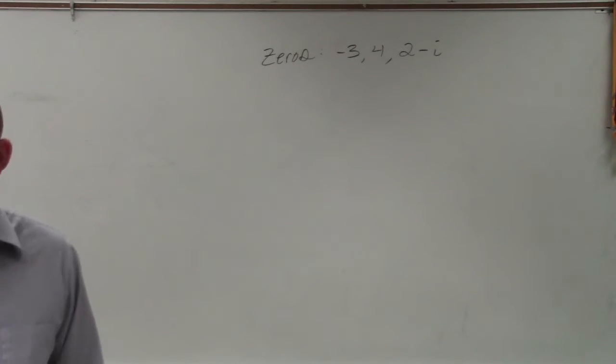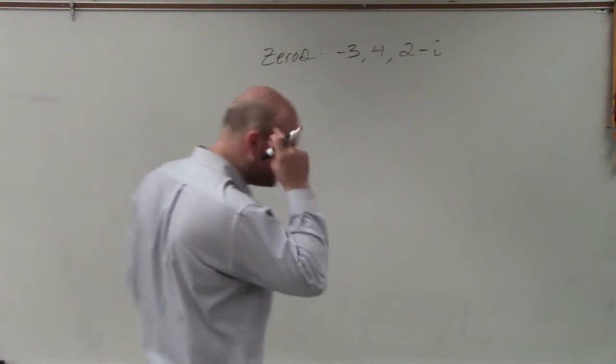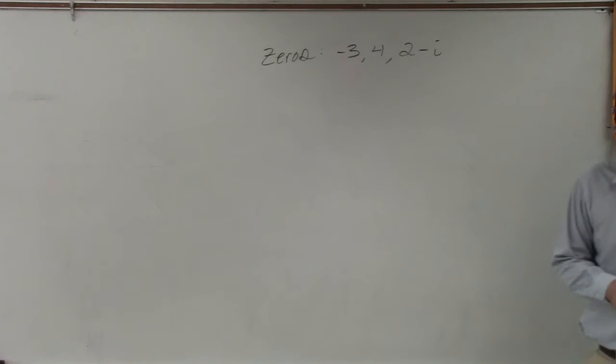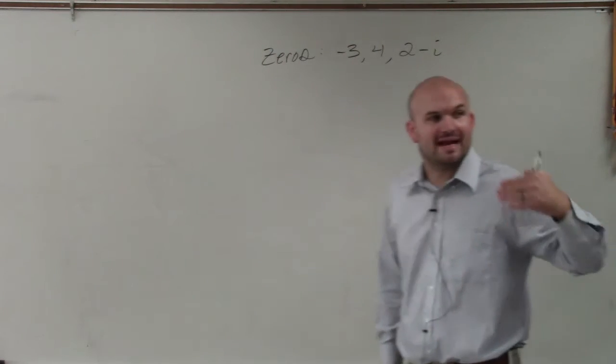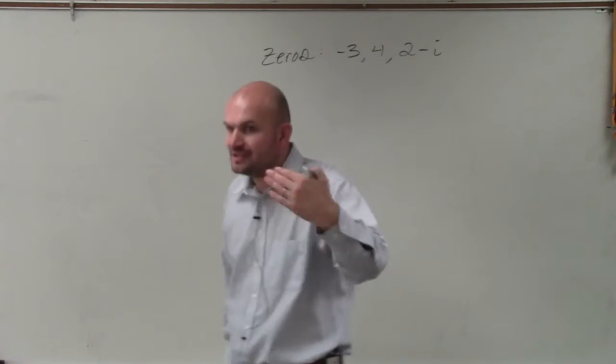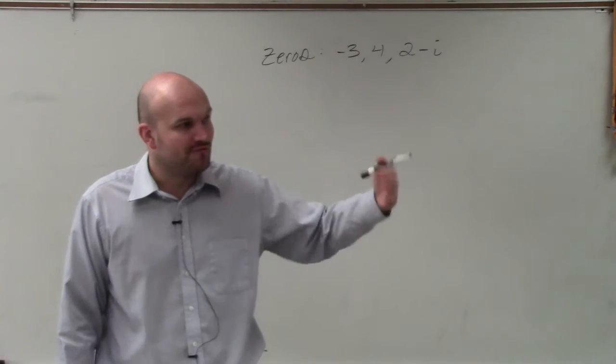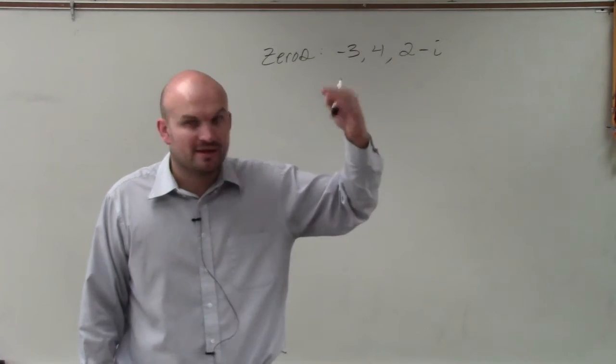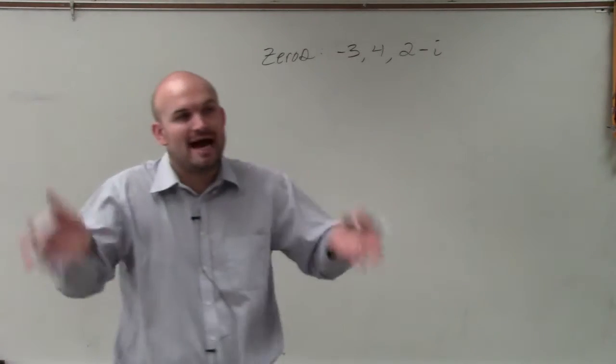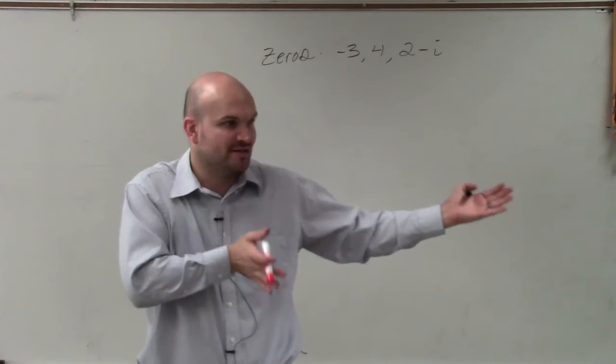A student asks if it's 2 plus or minus i. The instructor responds positively, saying he left that off intentionally to make sure students remember and to emphasize the point that all complex numbers come from taking the square root of a negative number. It's plus or minus. You cannot have a complex number without its conjugate when talking about zeros.